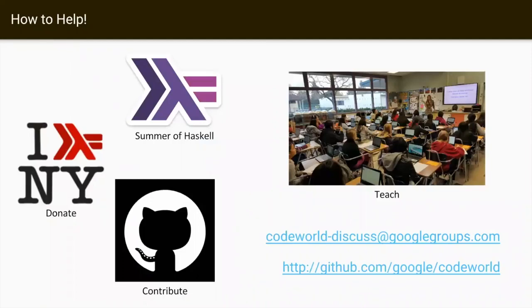If anyone wants to help, there are a few things you can do. Let college students know about Summer of Haskell — there are two slots for CodeWorld students, we have mentors available and we're excited about it. The New York Haskell Users Group is acting as umbrella organization for raising money for curriculum development. This is all open source on GitHub. And finally, do what I do: email all the schools around you and say 'I want to teach Haskell.' I promise you it's not as hard as it might first seem. Thank you for your time.